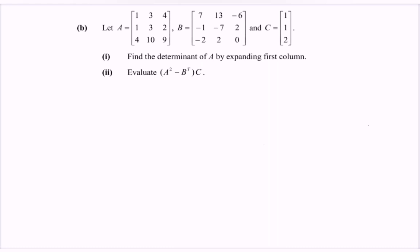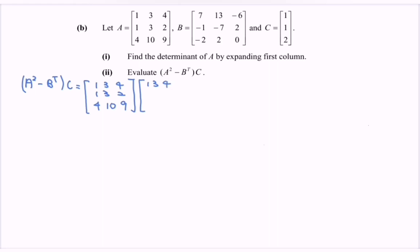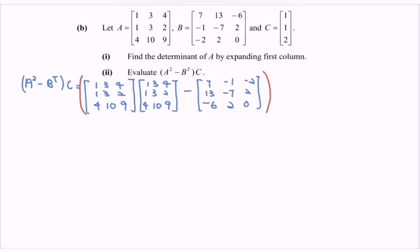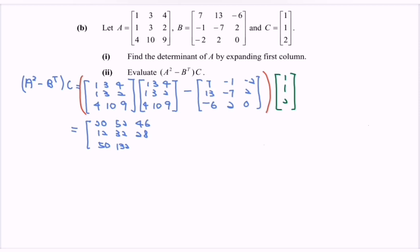Next, evaluate A squared minus B transpose, multiplied by C. First we compute A squared by multiplying A with A, giving the matrix with entries 20, 52, 46, 12, 32, 28, 50, 132, 117.